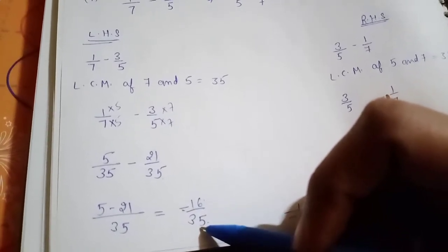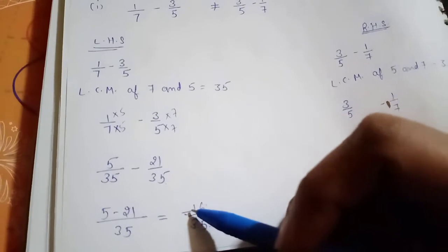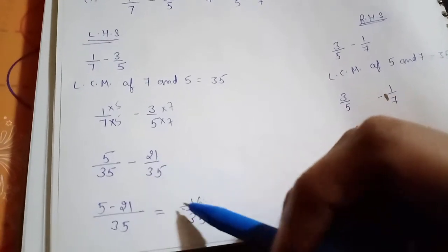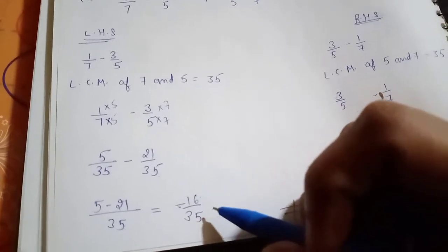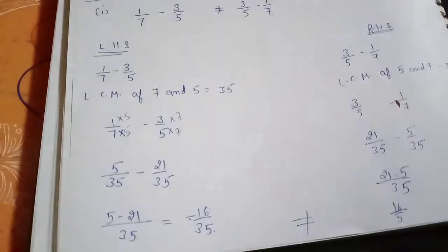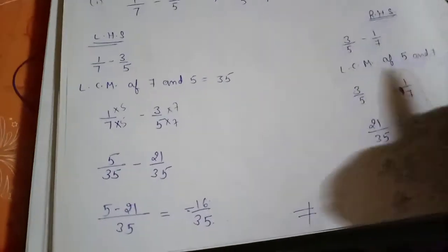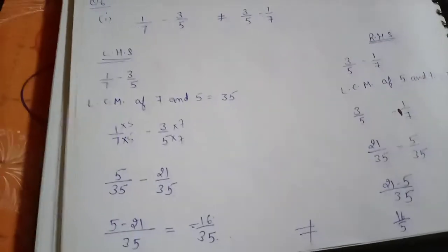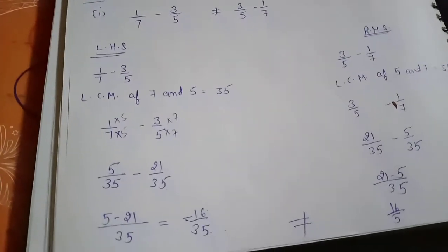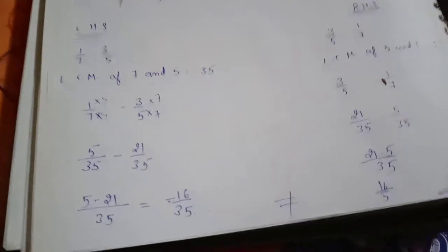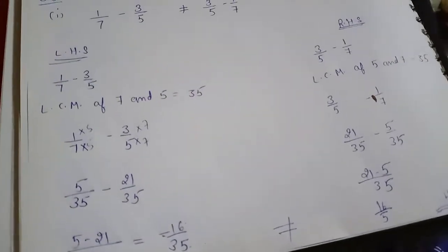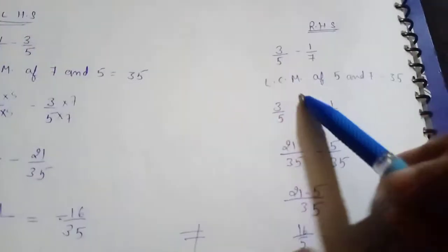Sign is very important to assign. Always remember — in multiplication, division, addition, and subtraction — my last step is to check what sign my answer will carry. Don't think the answer is 16 upon 35 without the negative sign. It will change the meaning completely: 16 upon 35 does not equal minus 16 upon 35. Pay attention when you are assigning the sign.